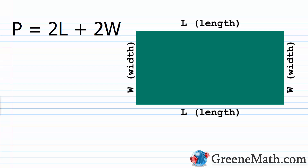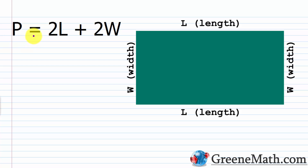The first formula we'll look at is for the perimeter of a rectangle. If you have a rectangle, you have a length on the top and bottom and a width on the sides. Length is labeled L and width is labeled W. The perimeter — the distance around a rectangle — is given as P equals two times the length plus two times the width, or P = 2L + 2W. We want to solve for W and also for L.